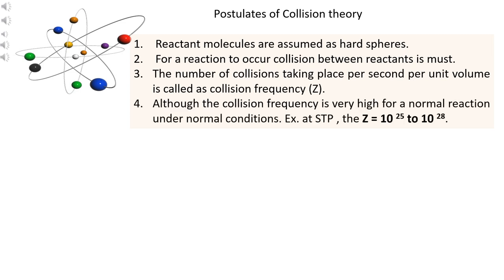Let us see the postulates of collision theory. First, reactant molecules are assumed to be hard spheres. Second, for a reaction to occur, collision between reactants is a must — these hard spheres will definitely collide with each other. Third, the number of collisions taking place per second per unit volume is called the collision frequency. Fourth, although the collision frequency is very high under normal conditions at STP — in the range of 10²⁵ to 10²⁸ — the rate of reaction also depends upon two other factors.